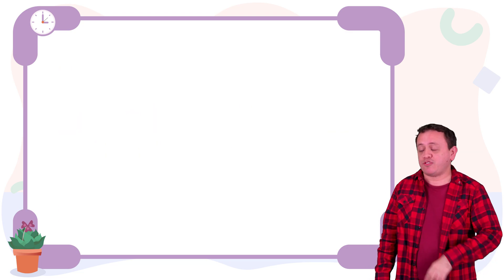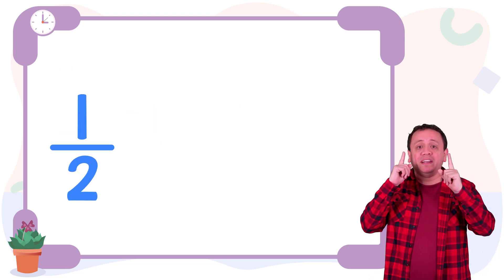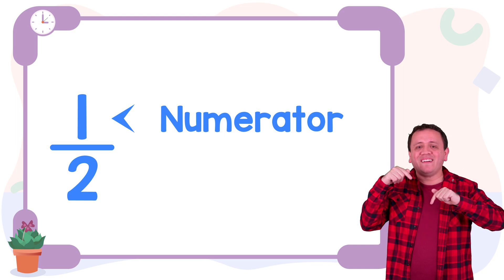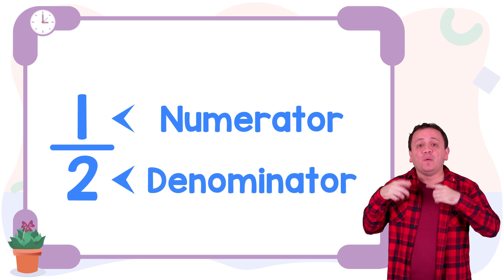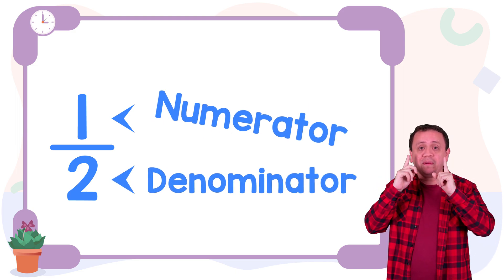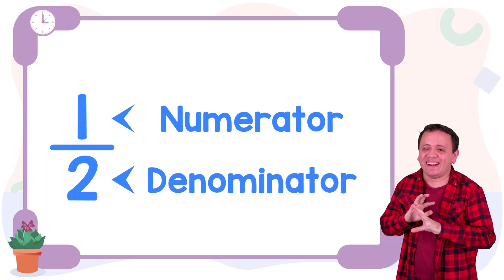First, we need to remember that in a fraction like this one, the top number is a numerator and the bottom number is a denominator. Once again, the top number is a numerator and the bottom number is a denominator.